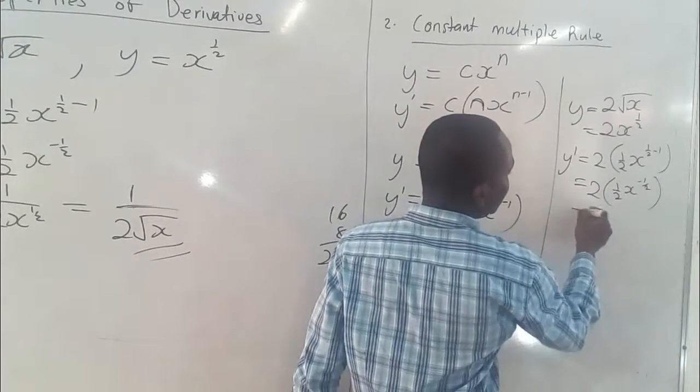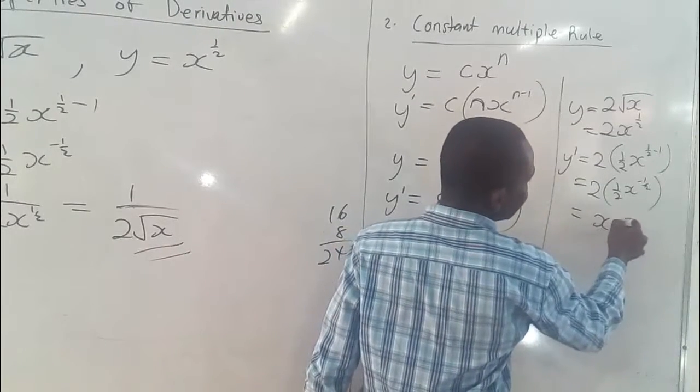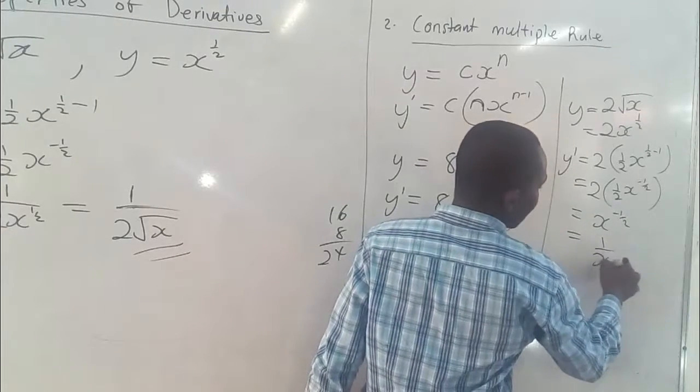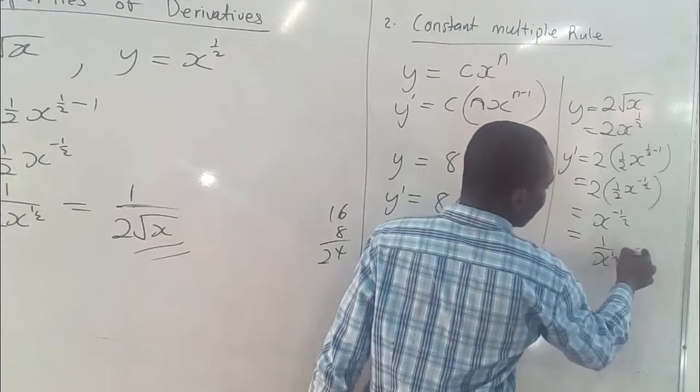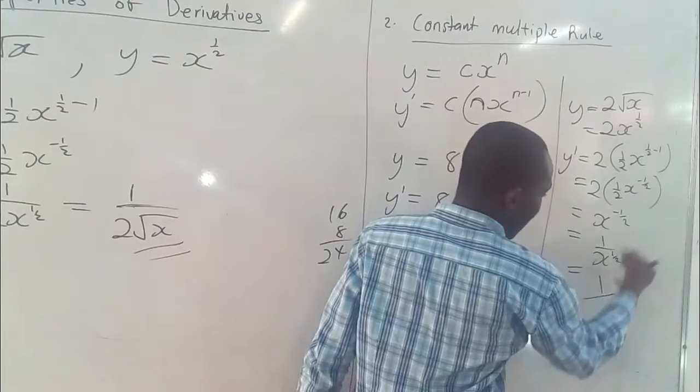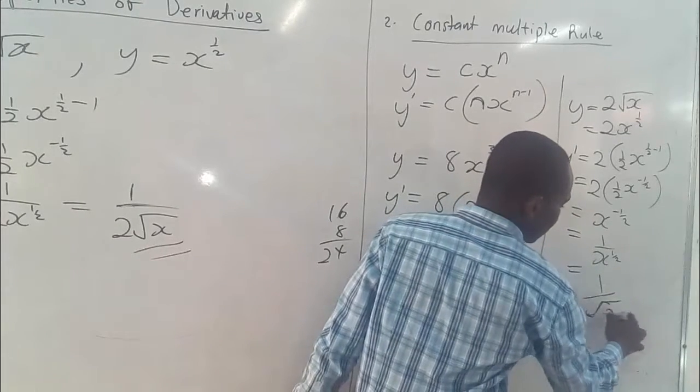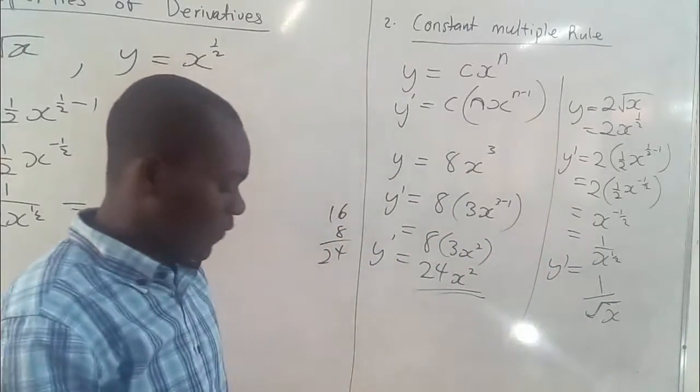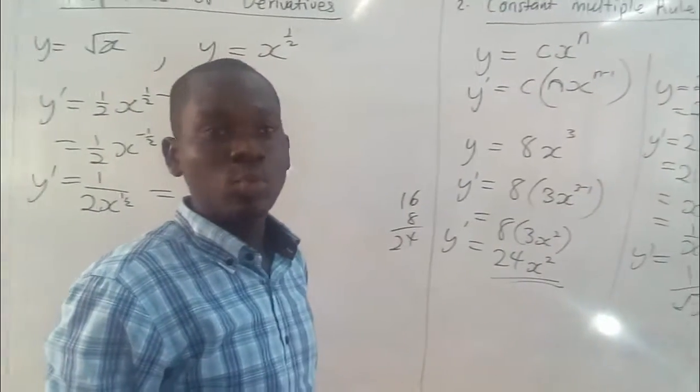So we multiply, we have 2 by half is 1. So we are left with x to the power minus half, which is also 1 over x to the power half, which we simplify to be square root of x in the denominator. So our derivative becomes 1 over square root of x. This is what we term our constant multiple rule.